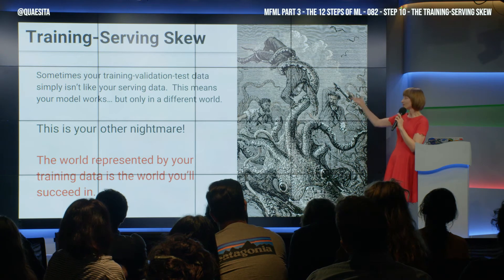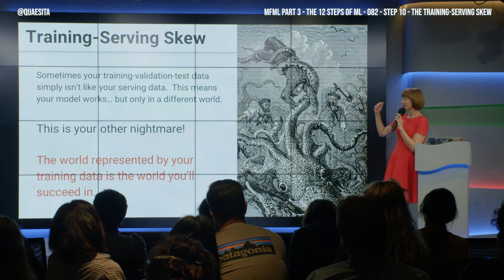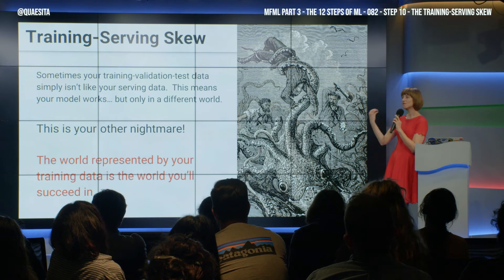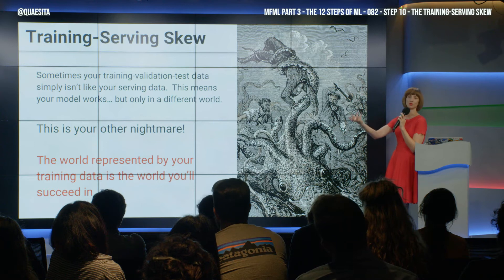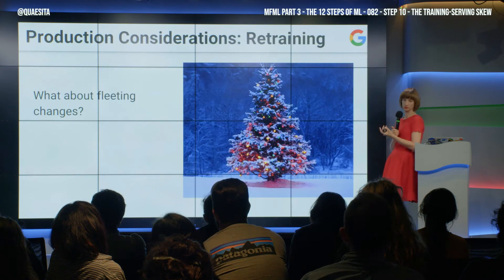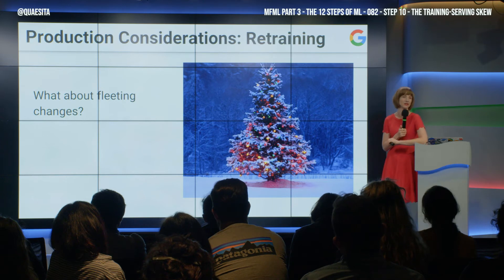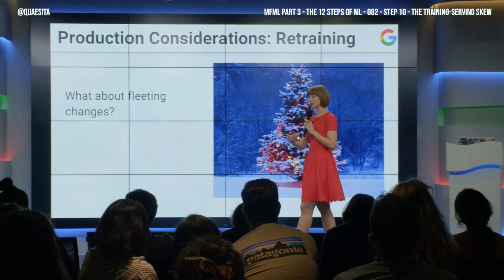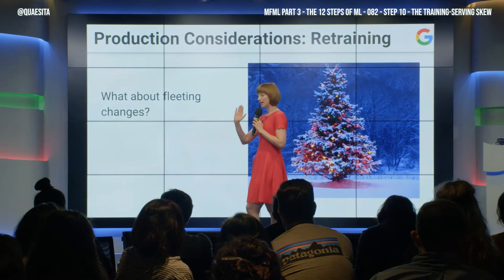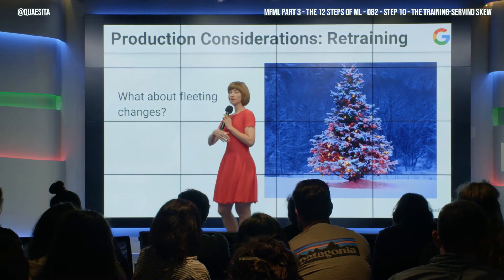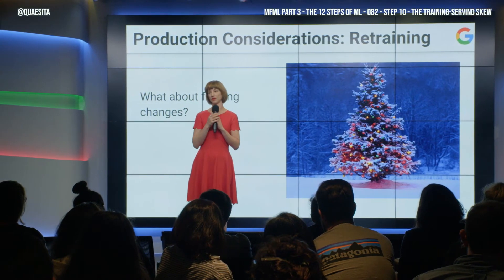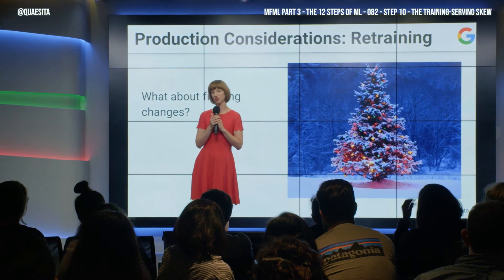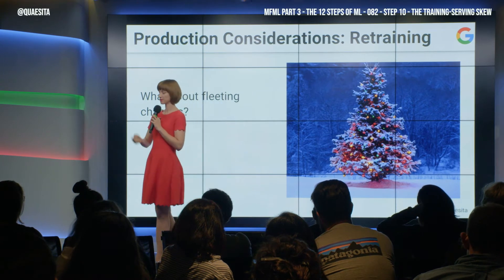In order to not be eaten alive by that, you'll need to do life testing and really think about what world you are dealing with. A classic example of this is fleeting changes in the data. Say you've determined that your world changes so rapidly that any data older than three months is just irrelevant — shouldn't be part of your model; you only want the last three months.